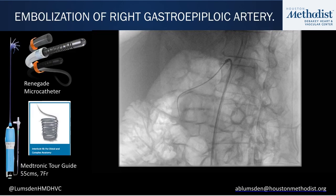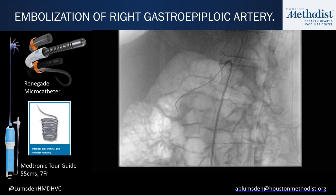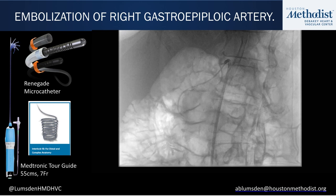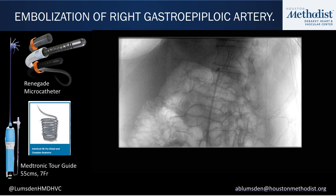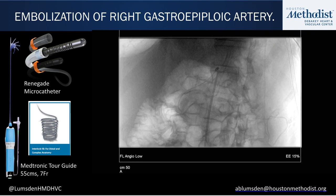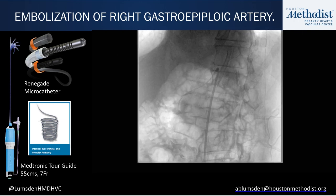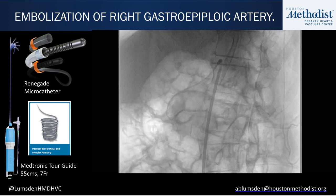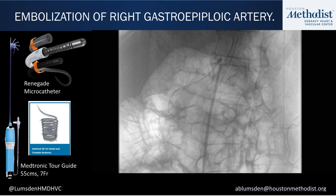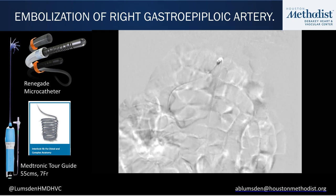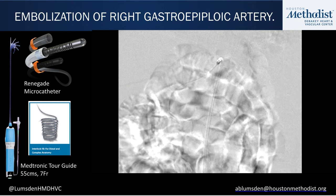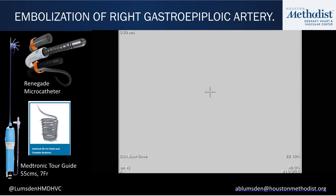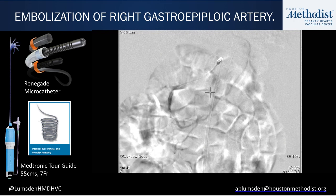Moving on to the procedure: the patient was accessed through the groin, and we accessed the celiac artery using a Tourguide catheter. We were using a 5 French Berenstein. The wire went down the gastroduodenal artery, and we advanced the catheter down into the gastroepiploic artery. We injected contrast and confirmed we were in the right gastroepiploic artery, which can be seen running all the way up along the greater curvature — though we couldn't even see the top end of that artery.